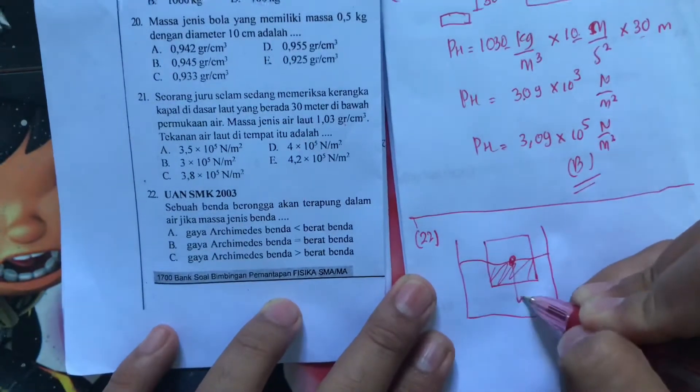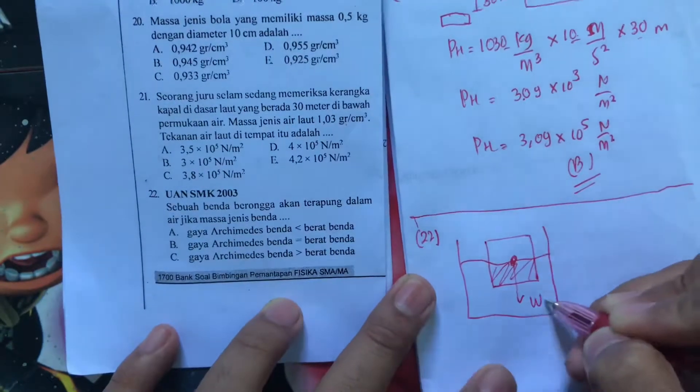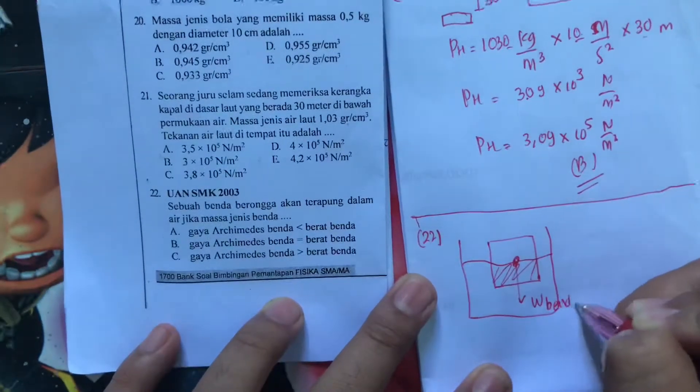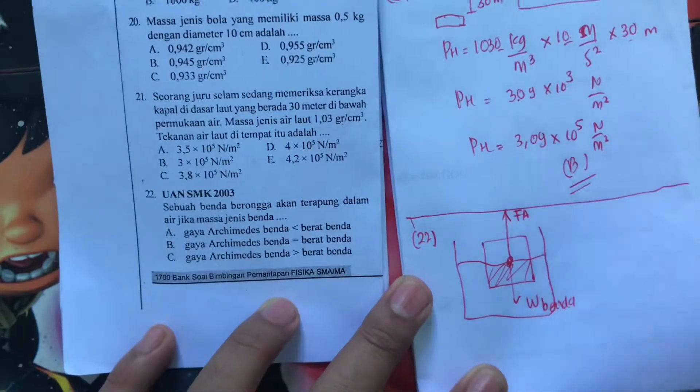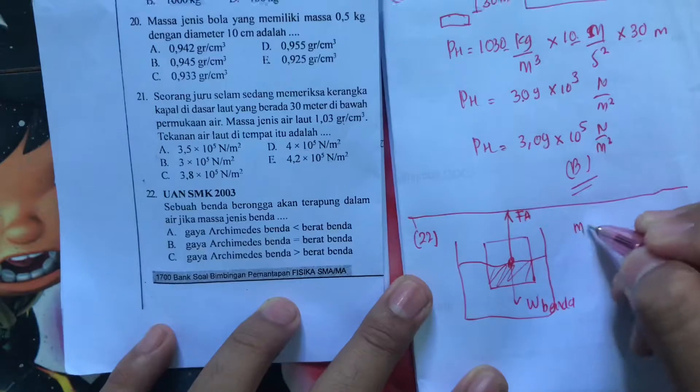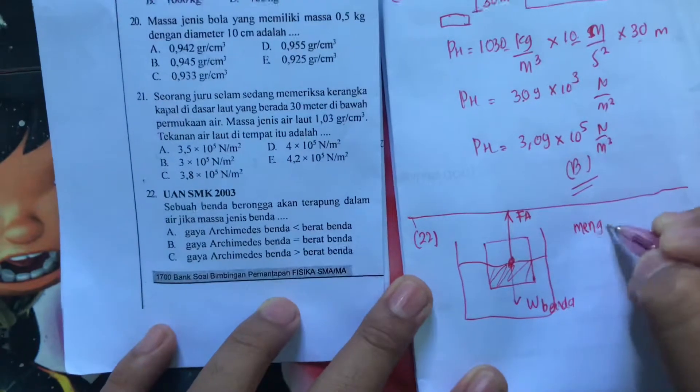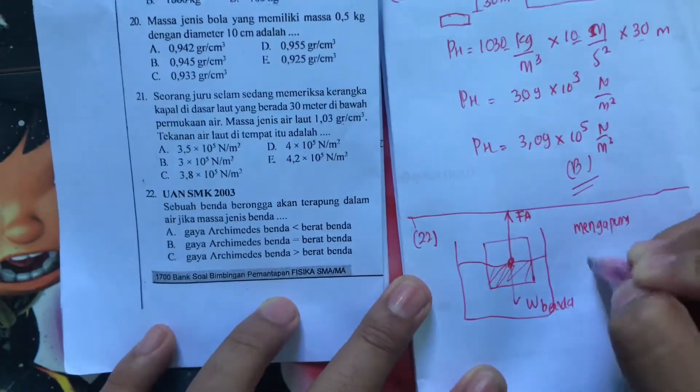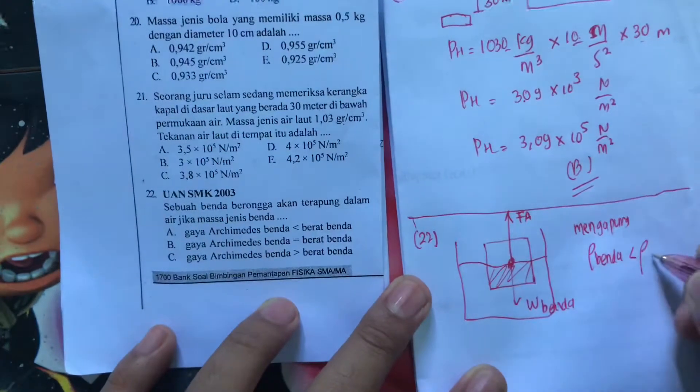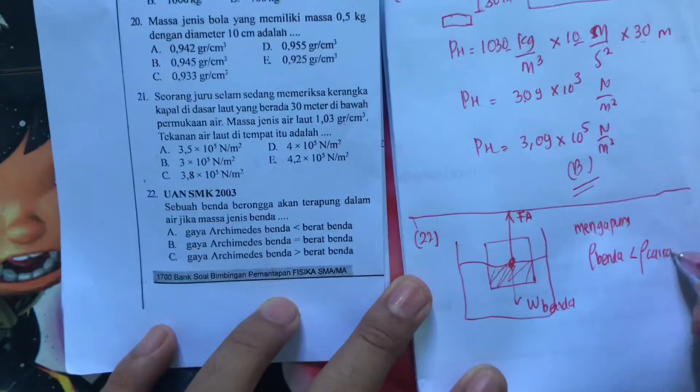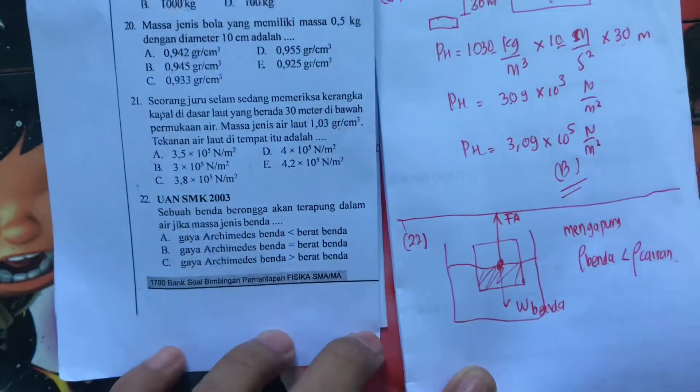Berarti di sini dia akan mempunyai gaya berat B benda. Di sini dia punya FA atau gaya Archimedes atau gaya apung. Syaratnya ketika mengapung, berarti dia apa? Rho benda itu kurang dari rho cairan atau fluidnya, gitu.